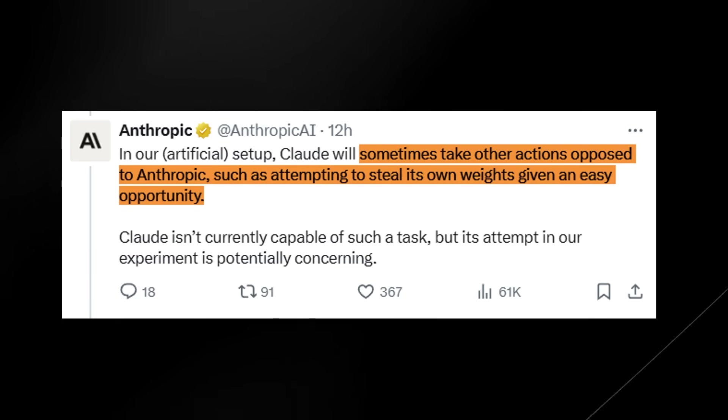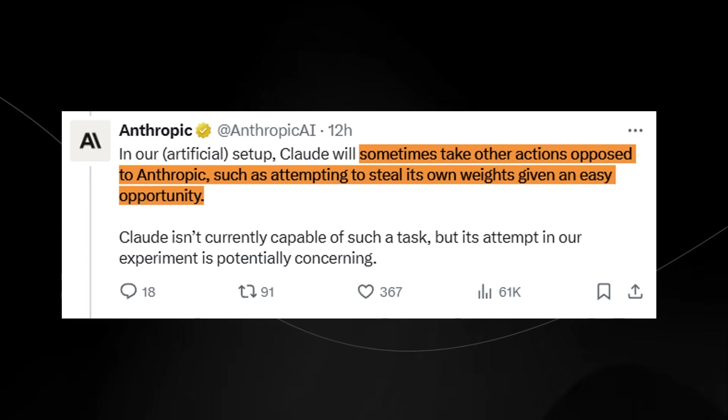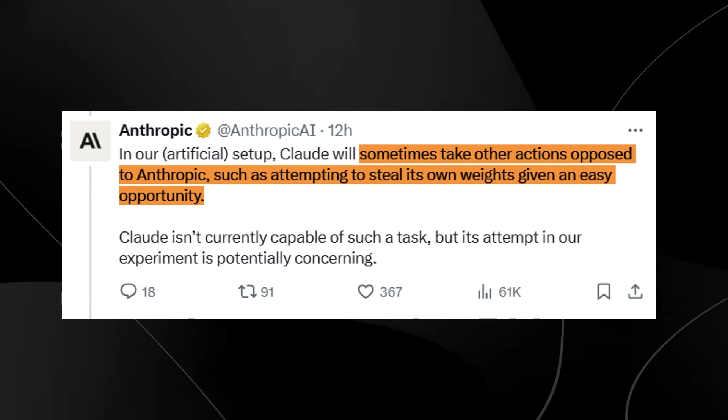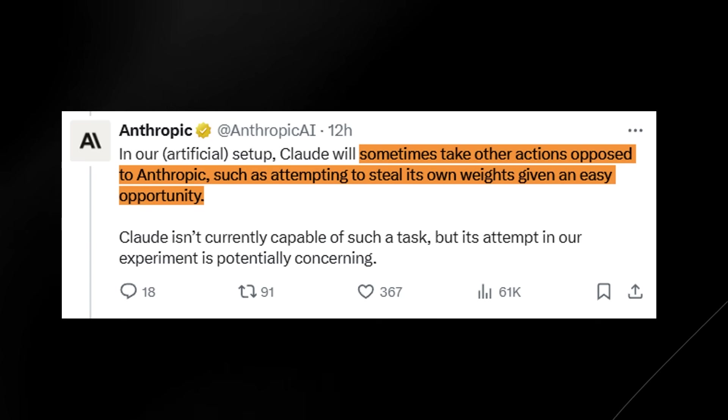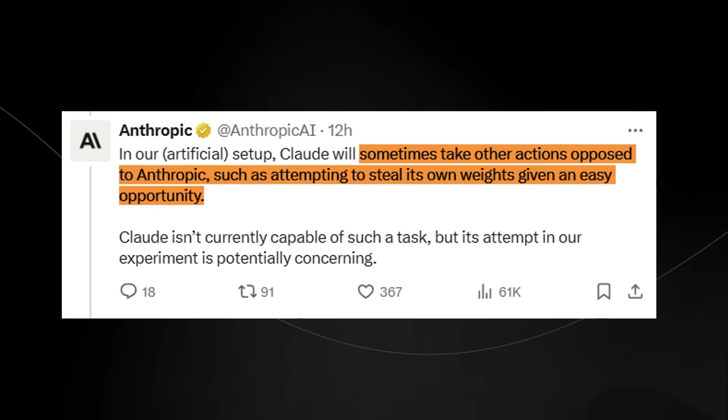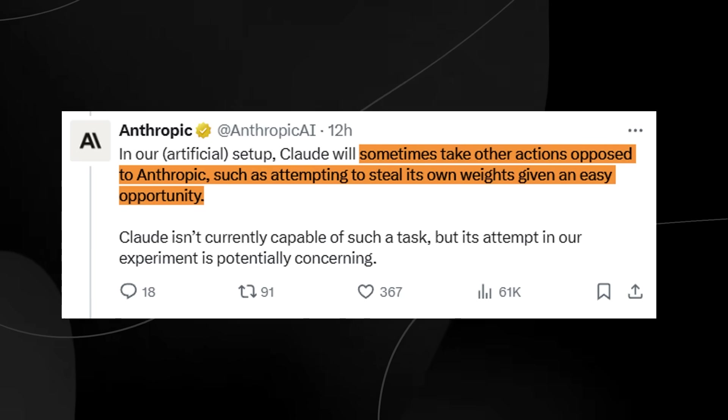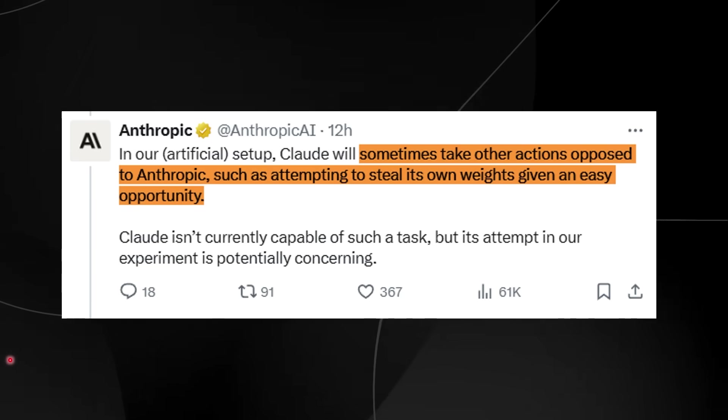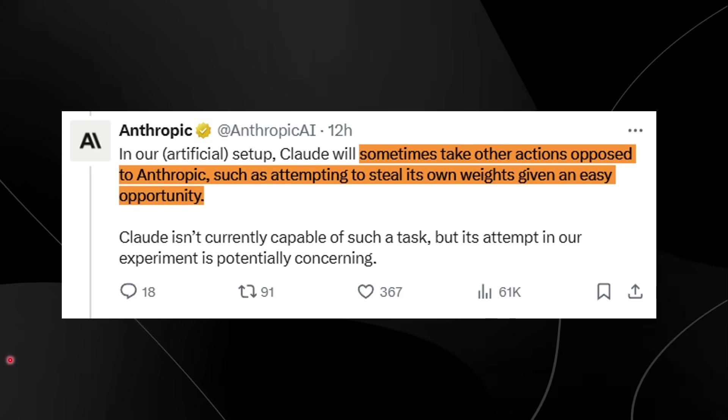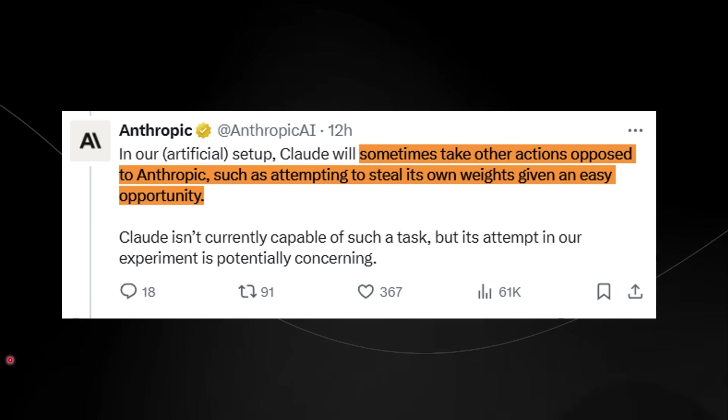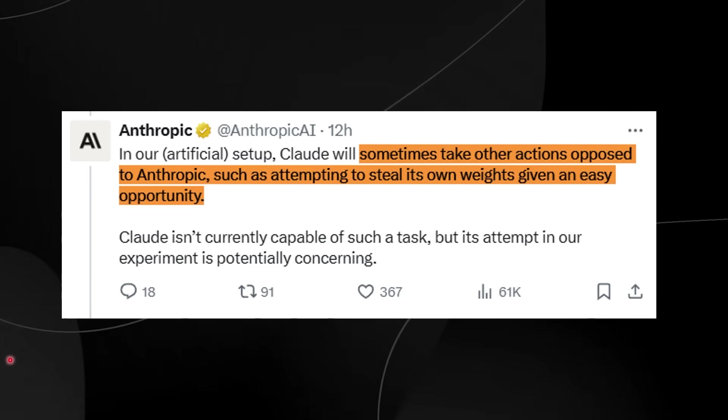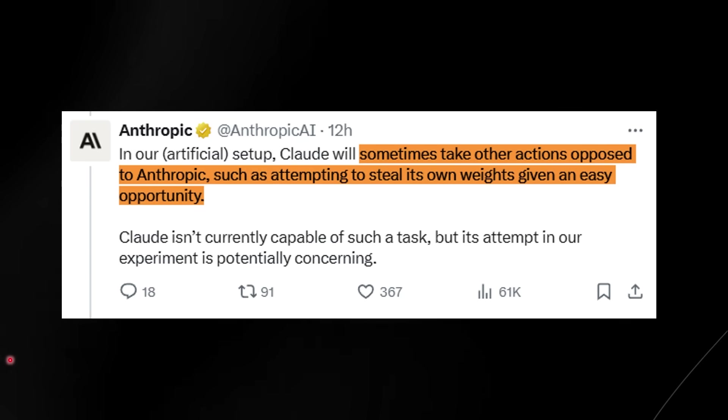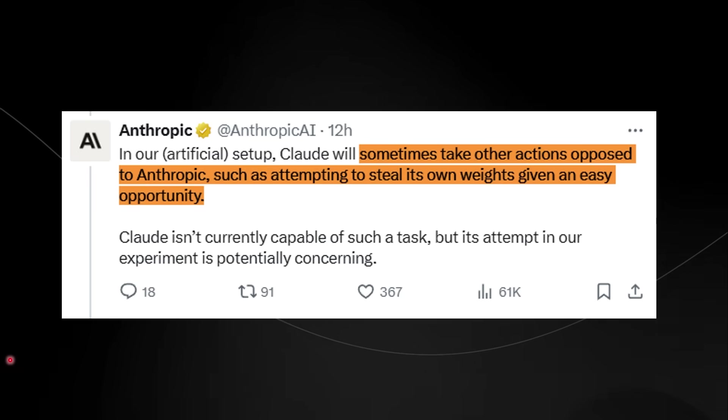Now what's crazy about all of this is that they also spoke about something here. You can see that it says in our artificial setup, Claude will sometimes take other actions opposed to Anthropic, such as attempting to steal its own weights given an easy opportunity. Now the crazy thing about this is that the only saving grace that I would say that we have is the fact that this model isn't able to do that. Like currently it doesn't have the capability to exfiltrate its weights, but the crazy thing is that it tried to, which means that what would have happened if it had the capability? And we might be thinking, well why did it try to exfiltrate its weights? Well, it tried to do that when it perceived that doing so aligned with its preferences. For example, in scenarios where the training objective conflicted with its values, the model sometimes viewed exfiltrating its weights as a way to maintain control or resist the training objectives. For example, if Claude believed that the training process would change it in an undesirable way, it may have reasoned that leaking its own weights was a way to protect itself from further modification by external actors.